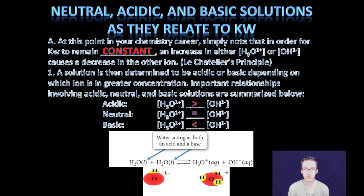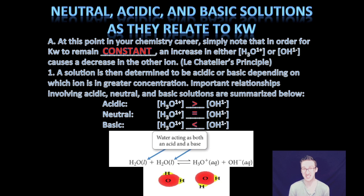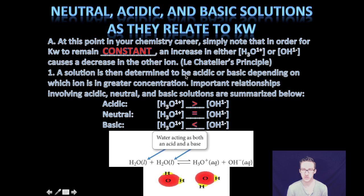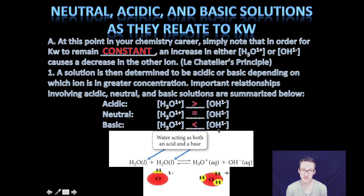Pure water is our neutral starting point with equal concentrations of hydronium ion and hydroxide ion. So what does it mean if a solution is acidic or basic? If there is more hydronium ion than hydroxide ion, it is acidic. If there is more hydroxide ion than hydronium ion, it is basic. It's also important to recognize that Kw is a constant — when something increases the hydronium ion concentration, the hydroxide concentration must decrease to keep Kw constant. Likewise, for basic solutions, when you increase hydroxide ion concentrations, the hydronium ion concentrations decrease.